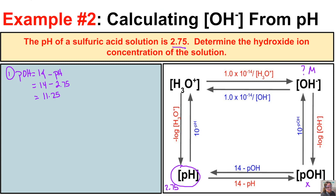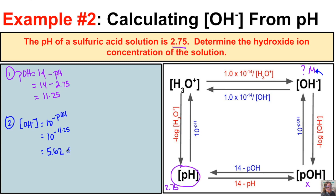This is not the final answer — it is just our first step. In the second step, we find the OH⁻ concentration by taking 10 to the negative pOH, which is 10⁻¹¹·²⁵, and we end up with 5.62×10⁻¹² moles per liter. So a sulfuric acid solution with a pH of 2.75 has a hydroxide ion concentration of 5.62×10⁻¹² moles per liter.